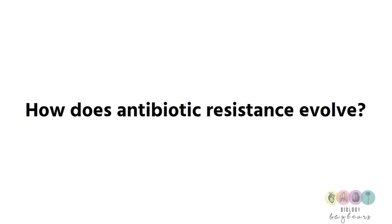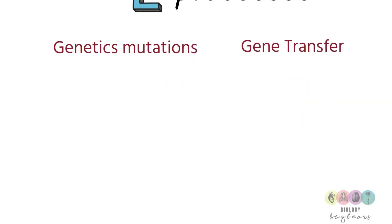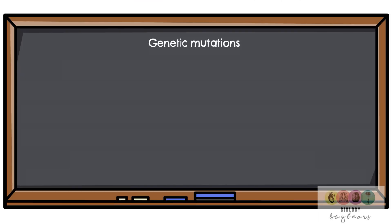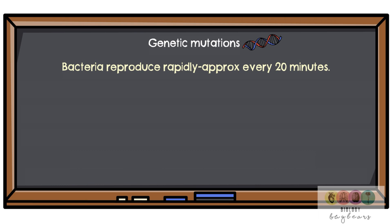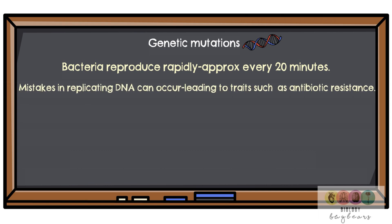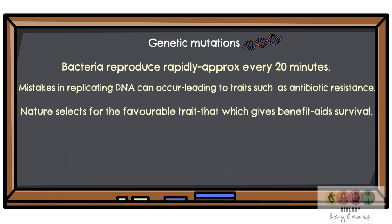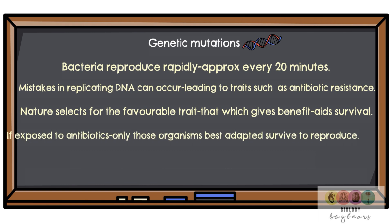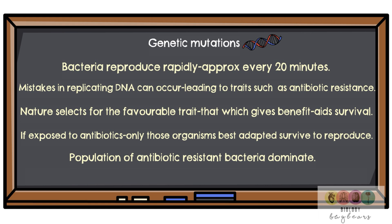This leads us to the question: how does antibiotic resistance evolve? There are two processes — genetic mutations and gene transfer. Bacteria can reproduce very rapidly by binary fission, approximately every 20 minutes. The speed at which they reproduce means mistakes can be made in copying the DNA, and this can lead to traits such as antibiotic resistance. Nature selects for the advantageous trait — if bacteria have acquired antibiotic resistance and are then exposed to antibiotics, they have the advantageous trait, they survive and reproduce, and you get a population of antibiotic resistant bacteria dominating.